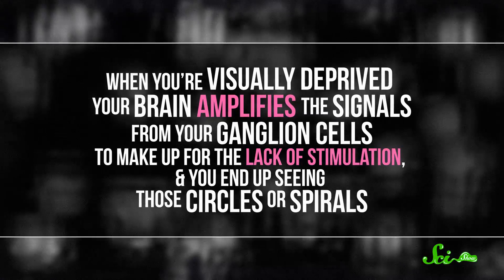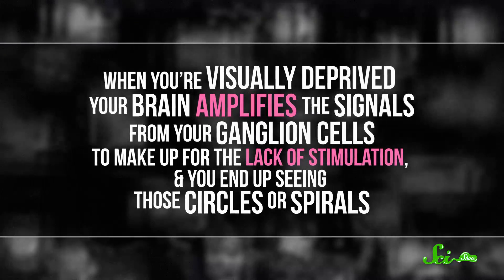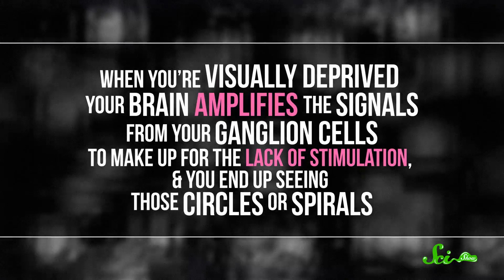Prisoner's cinema is probably caused by a combination of phosphenes and sensory deprivation. Even though a prisoner's or truck driver's eyes are open, they're staring at what's basically an unchanging scene, so their brain isn't getting much new information. And when you're visually deprived, your brain amplifies the signals coming from your ganglion cells to make up for the lack of stimulation, and you end up seeing those circles or spirals.